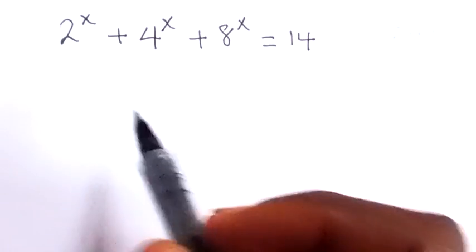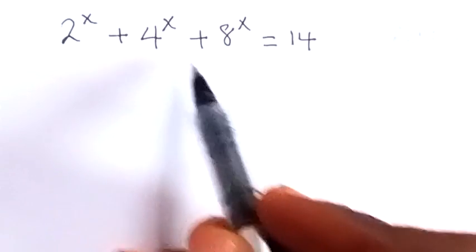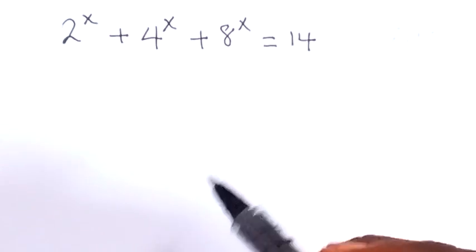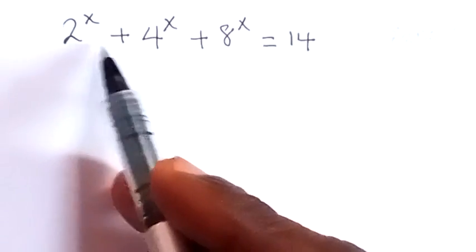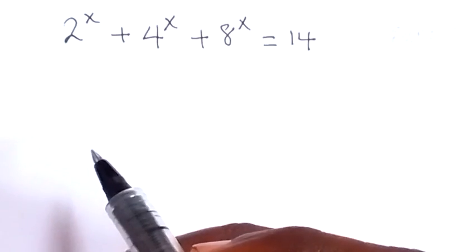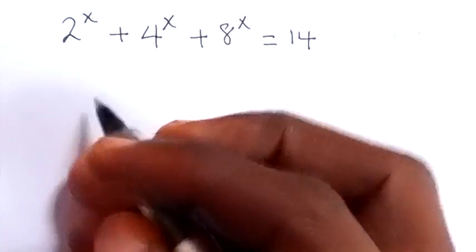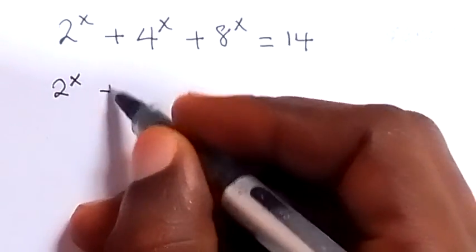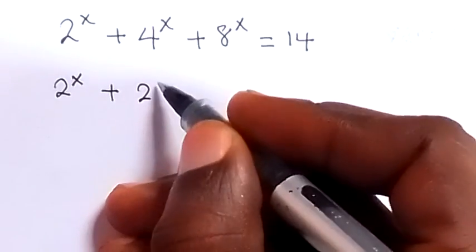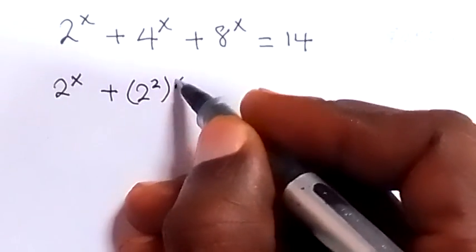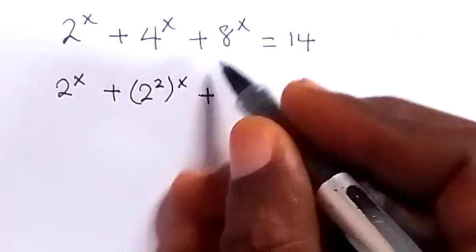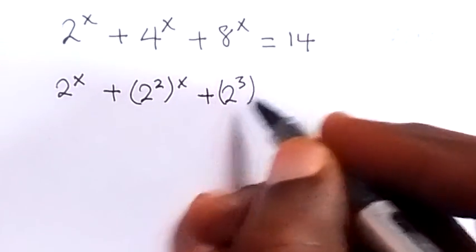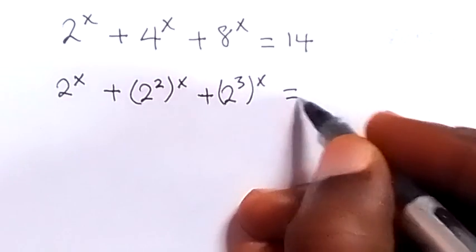How to solve this problem: 2 raised to power x plus 4 raised to power x plus 8 raised to power x equals 14. From here, let's change everything on the left-hand side to have the same base. So this is 2 raised to power x, then plus 4 can be written as 2 raised to power 2 raised to power x, plus 8 can be written as 2 raised to power 3 raised to power x, then equals 14.